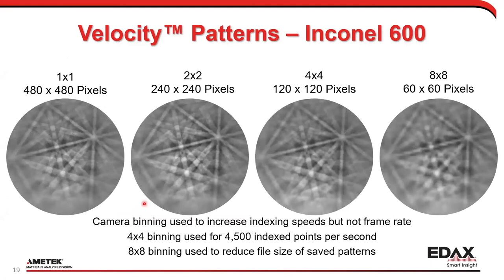Looking at what Velocity patterns look like at different binnings: one-by-one shows fine details, Kikuchi lines, and zones clearly. Two-by-two shows a slight difference in pattern quality, but it's very slight. Even at four-by-four there's very little visual difference that you as a human can see between a one-by-one and a four-by-four pattern.